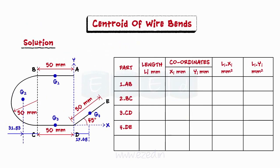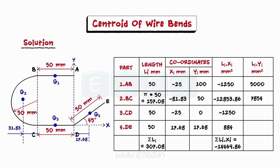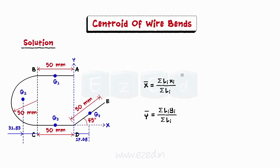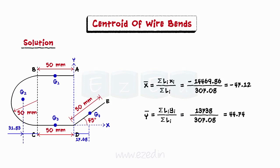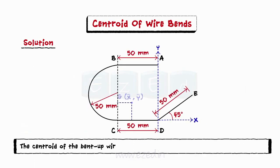We will now tabulate the values of the four parts. The lengths and the coordinates of centroids of the different parts are first entered in the table. Add up the lengths of the different parts to get the total length. Add up the product of length and x-coordinate of different parts to obtain its summation, and similarly for the y-coordinate. Using these two formulae, we can find the x-coordinate and y-coordinate of the centroid of the wire bend. Thus, the centroid of the bent-up wire has coordinates (-47.12, 44.74) mm.